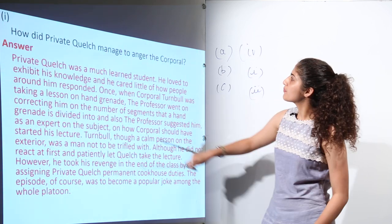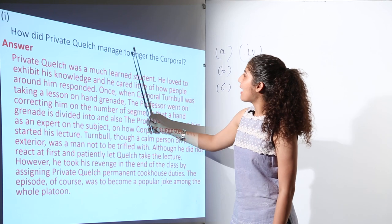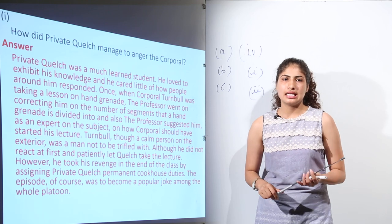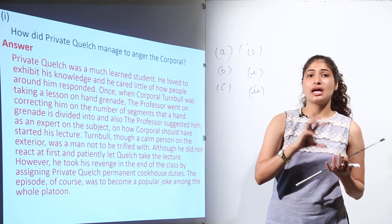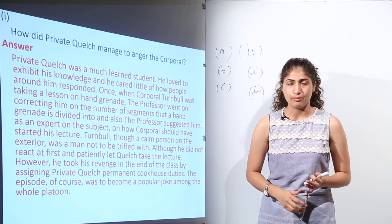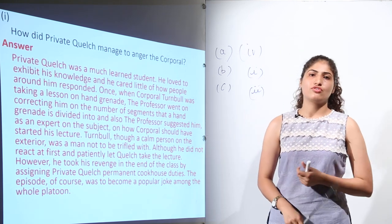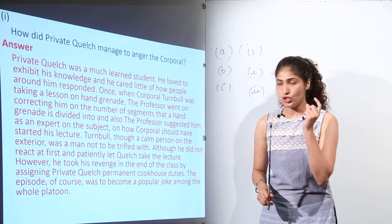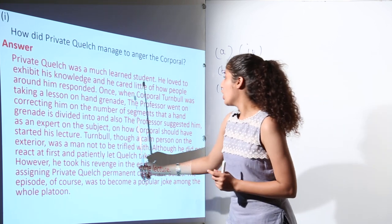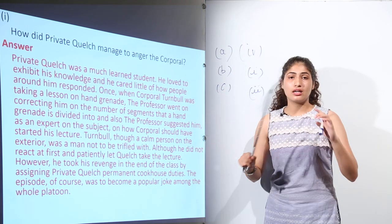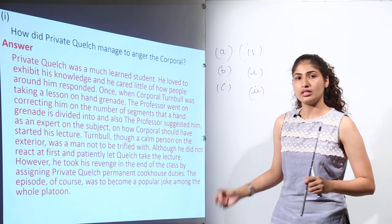Next question is, how did Private Quelch manage to anger the Corporal? When Corporal was telling how the outside of the grenade is being divided into different fragments, at that time, Professor interrupted the instructor. He said that the perfect number, the exact number is 44. And not only this, he said that Corporal should start his lecture with telling the characteristics of the grenade.